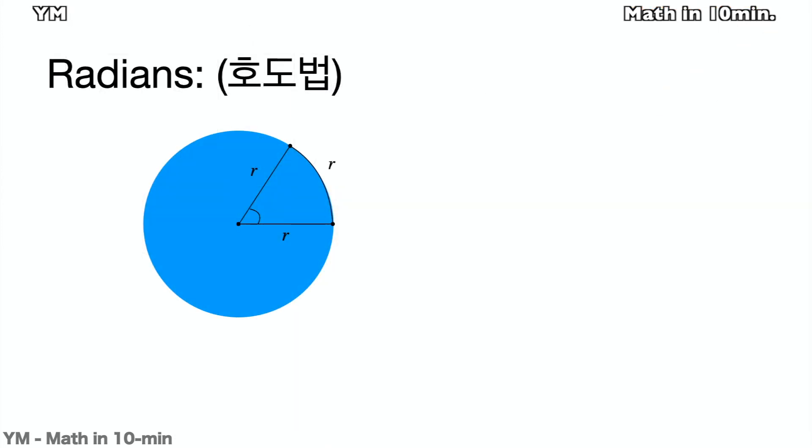The next is radians. To simply explain, the radian is the other measurement of the angle instead of degree. Its definition starts with this arc in the slide. When the radius of an arc and its arc length are the same, we define the angle of the arc as 1 radian. It just express as 1 radian or just 1.